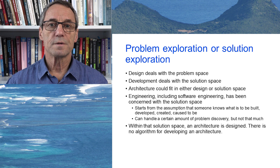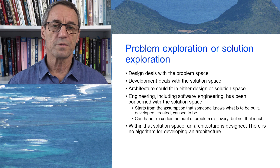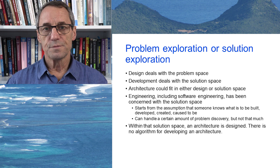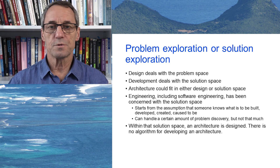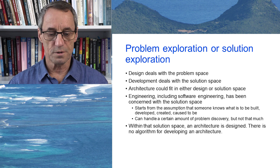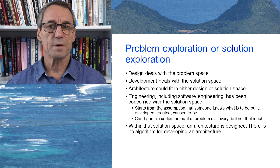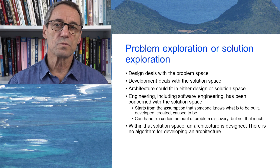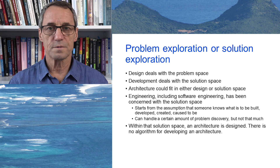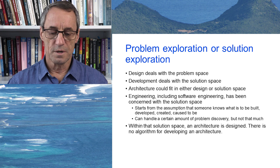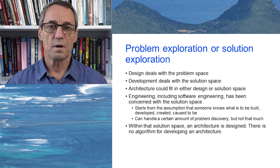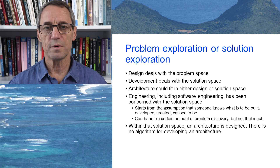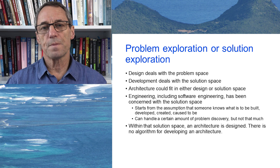In developing a system we have to deal with the difference between the problem space and the solution space. Design deals with the problem space — trying to establish exactly what the problem is and which problem you're trying to solve. Development deals with the solution space — we have a proposed solution and we're implementing it. Architecture could reasonably fit into either of those; it straddles them both, because the architecture and the problem interact and there is negotiation between them about exactly what the problem is.